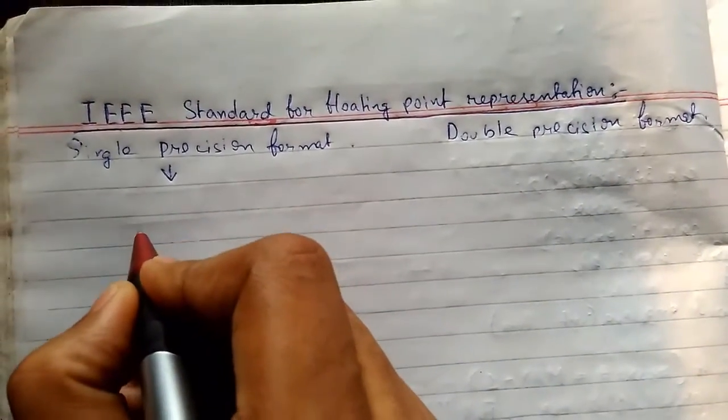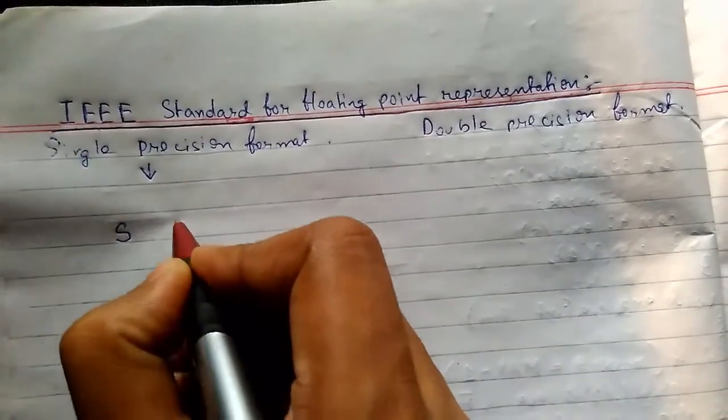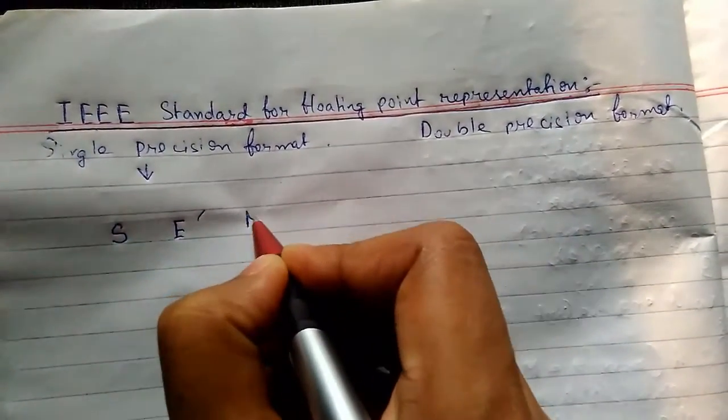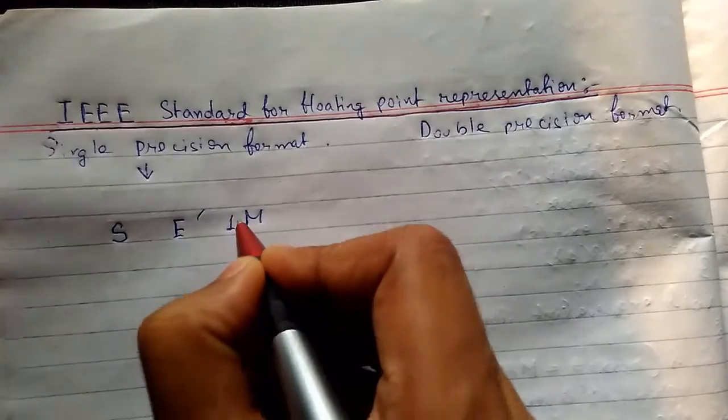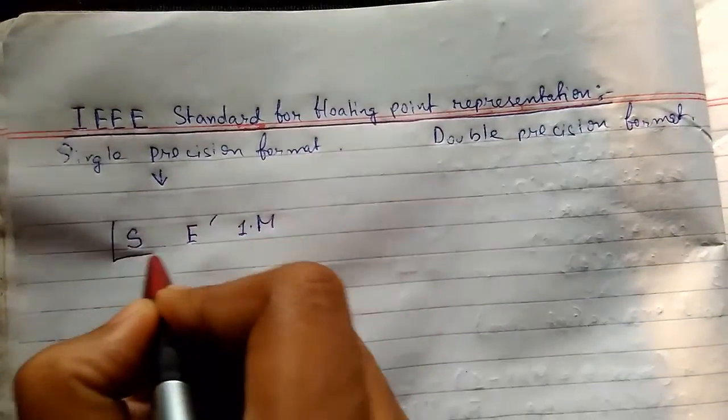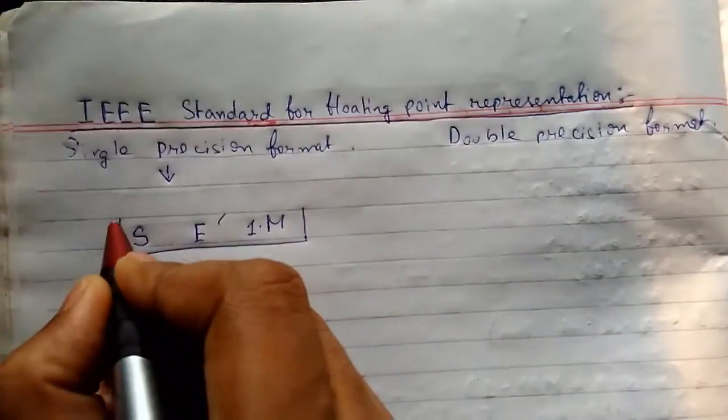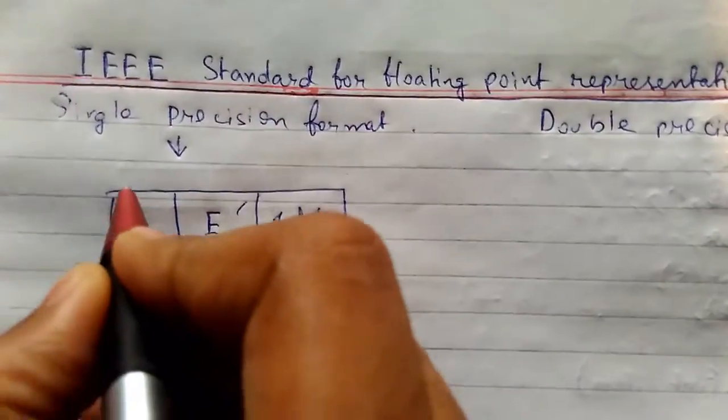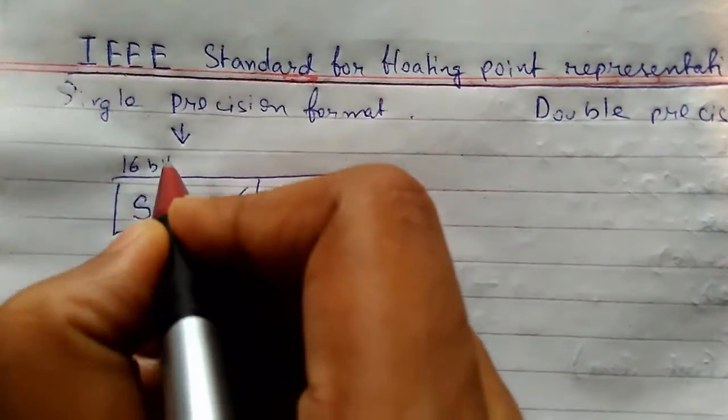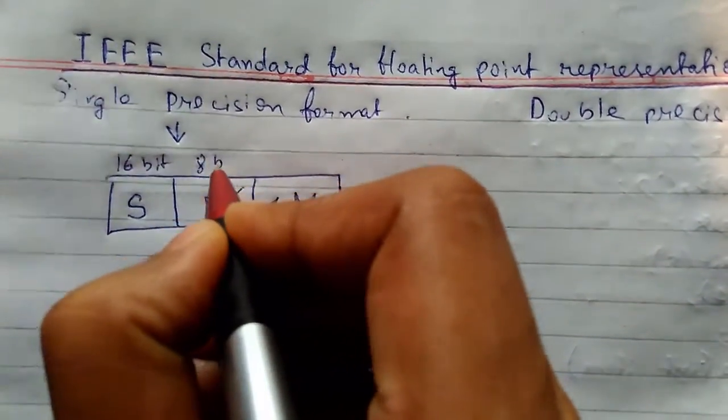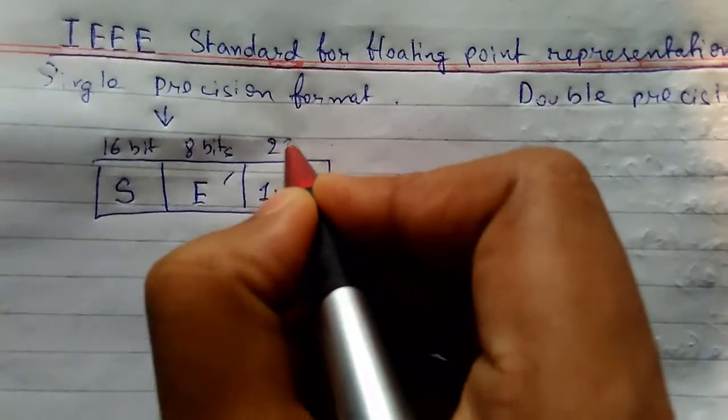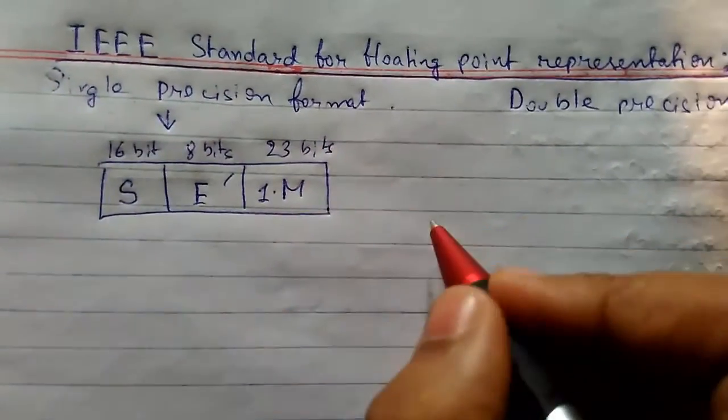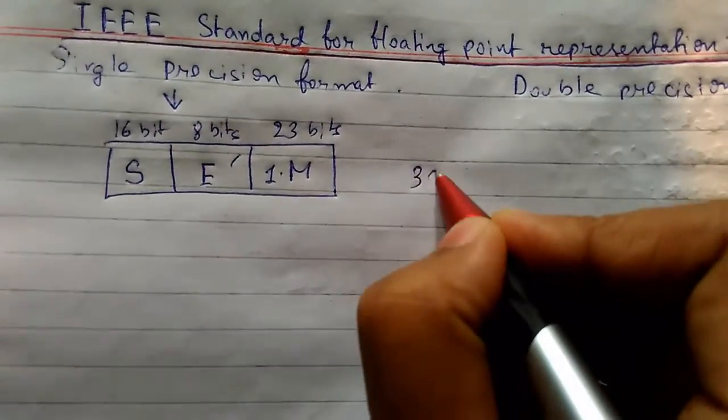For single precision format, the diagram is S, E bar, M or 1.M. This is 16 bit in size, this is 8 bits in size, and this is 23 bits in size. So this is a 32 bit format.